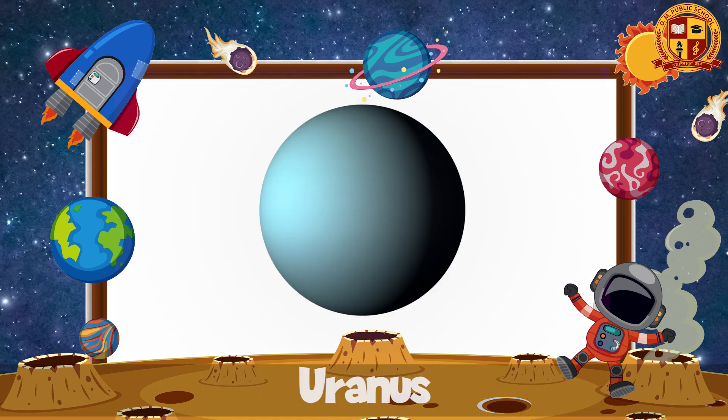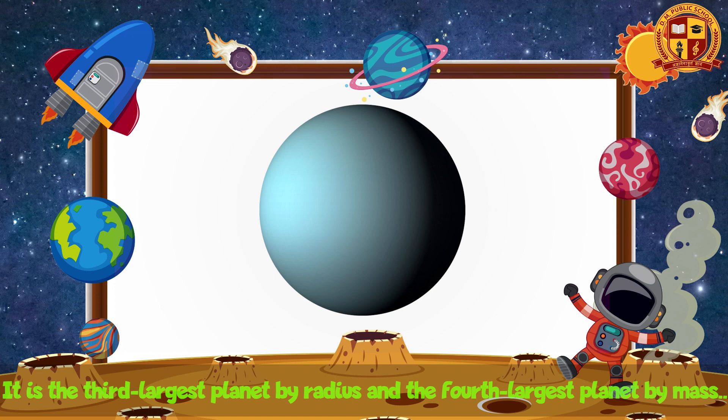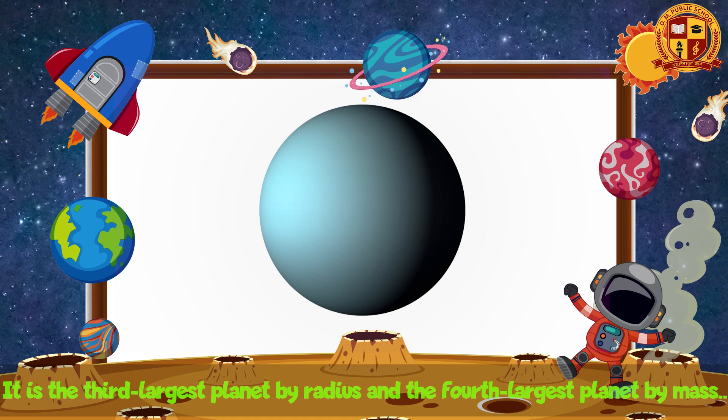Uranus is the third largest planet by radius and the fourth largest planet by mass.